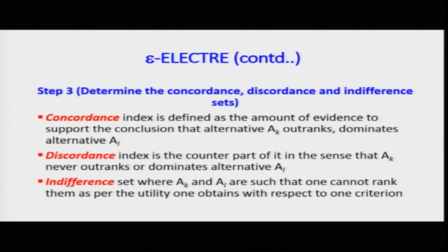In the Epsilon Electra method, we have three different sets based on indices: the concordance indices give us the concordance set (capital C), the indifference indices give us the indifference set (capital I), and the discordance indices give us the discordance matrix (capital D). Our main task is to formulate and find capital C, capital I, and capital D.